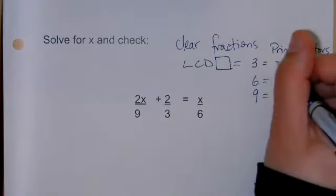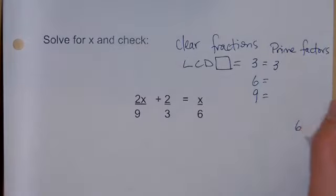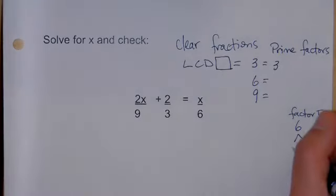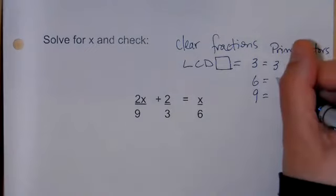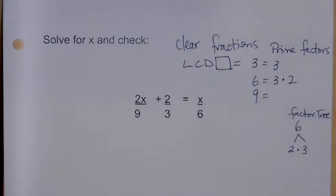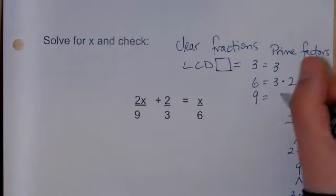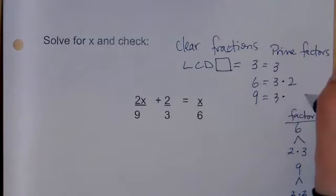We could find their prime factors. The 3 is already just prime, so it's only 3. If I take the 6 and make a little factor tree, I can come up with any two numbers that multiply together to give me 6. It's just 2 times 3, so I have 3 times 2. What about 9? If I were to factor 9, give me two factors of 9. Just 3 times 3, right? So here I'm going to put 3 times 3.